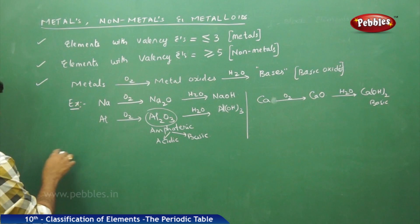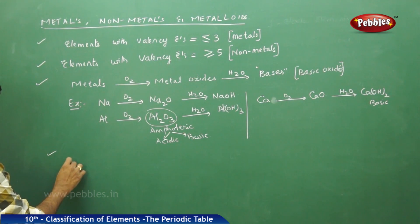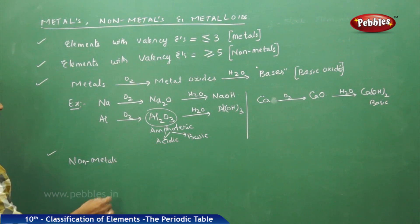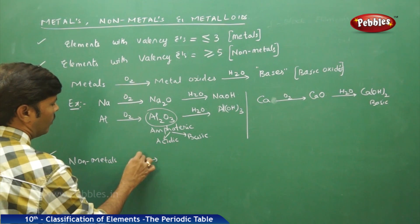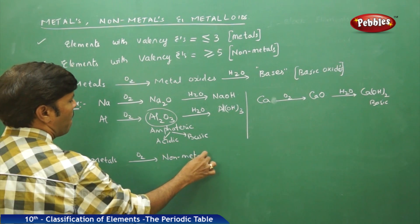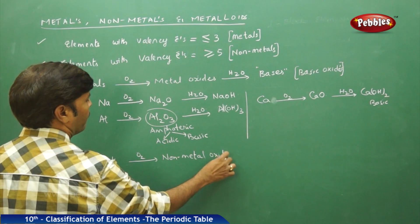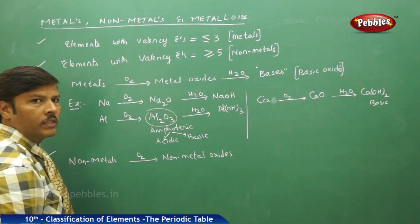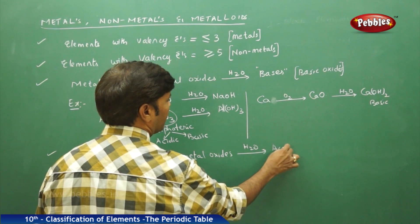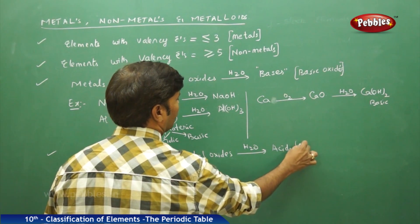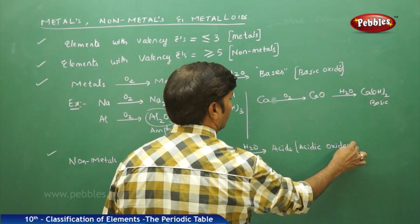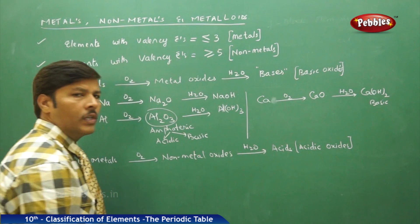If you go for non-metals, all non-metals when they interact with oxygen they form non-metal oxides. These non-metal oxides, when subjected to hydrolysis, give acids. So they are acidic oxides.